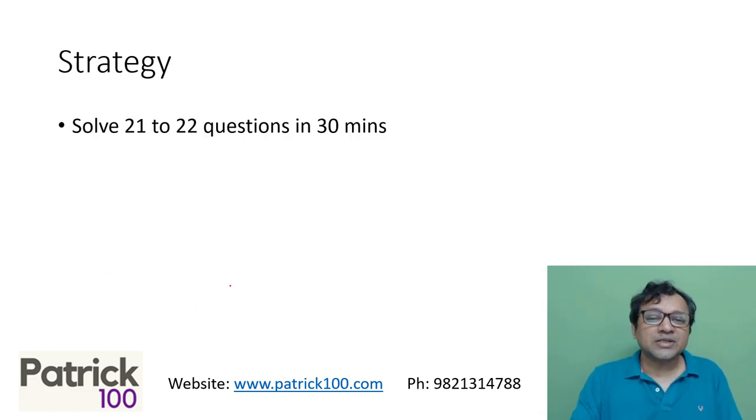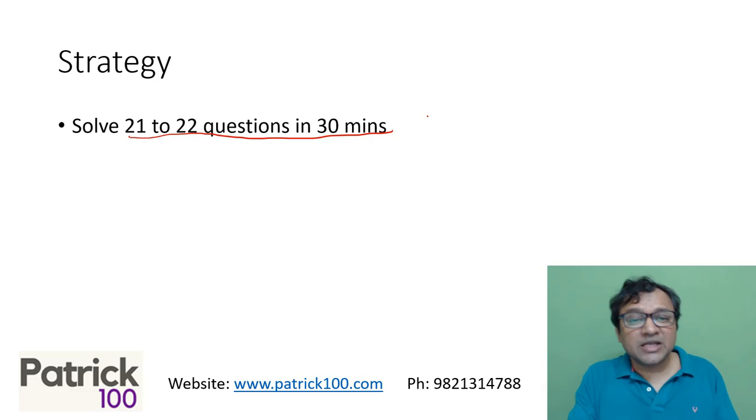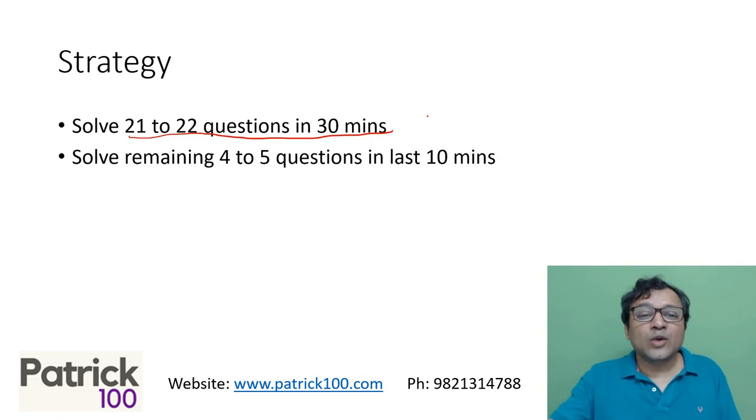Strategy to score 100 percentile. You can solve 21, 22 questions in 30 minutes. It again goes in two rounds. It's not that when you solve a paper, you get all the questions immediately. There will be some questions you may not get the answers to. Skip that. Don't try to waste your time on that. So that means in first 30 minutes, you may go to first round and solve 21 or 22 questions. You may leave around four to five questions.